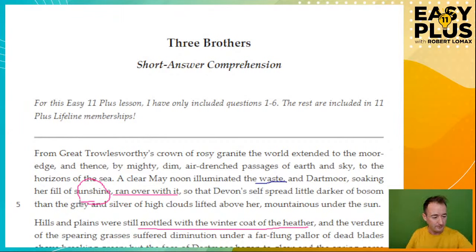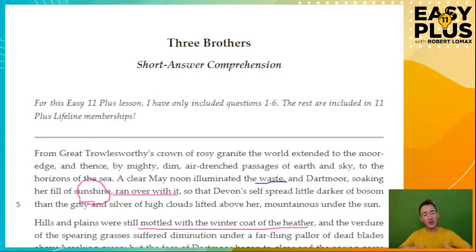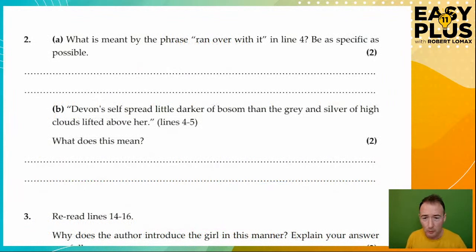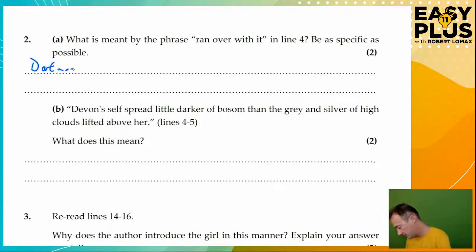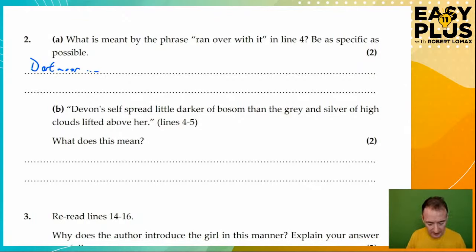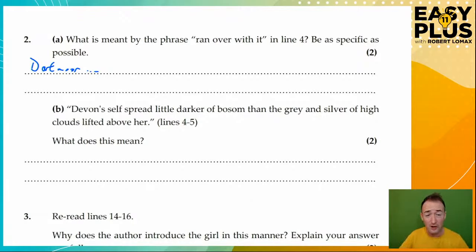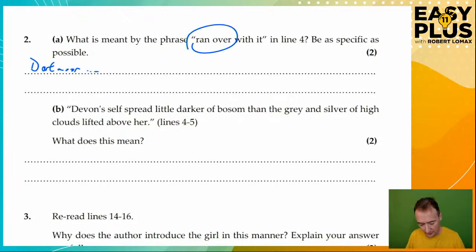If we were going to answer this really well, we'd say something like: Dartmoor was so bright that it seemed to overflow with sunshine. If you've got anything like 'it's full of sunshine' or 'very full of sunshine,' that will be absolutely fine. Saying it was so bright is a key bit of information for a mark, and 'it seemed to overflow with sunshine' gets the second mark because it clearly shows you understand what 'ran over with it' means — which is the key phrase here.